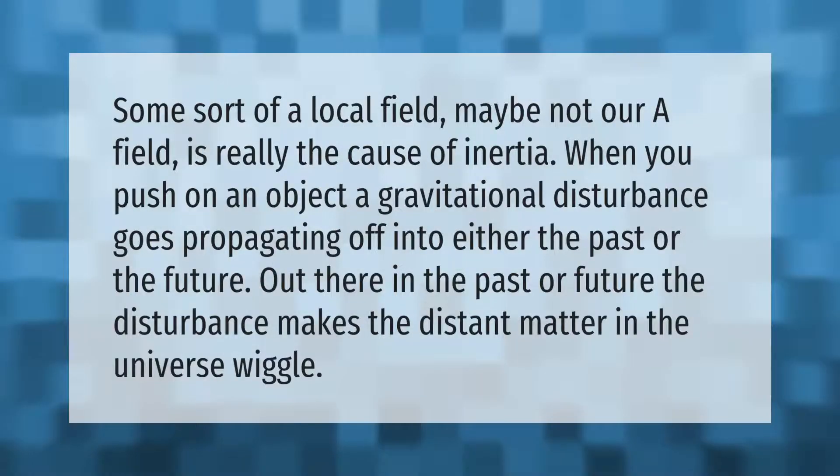Some sort of a local field, maybe not our A field, is really the cause of inertia. When you push on an object, a gravitational disturbance goes propagating off into either the past or the future. Out there in the past or future, the disturbance makes the distant matter in the universe wiggle.